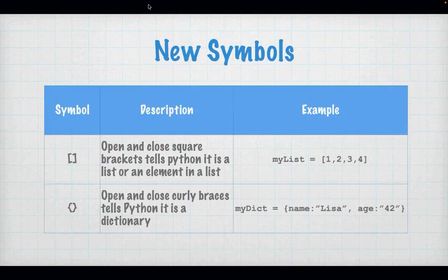We have a few new symbols we're going to be dealing with. The first is the open and close square bracket. An open and close square bracket is indicative of a list — an indication to Python that it's about to deal with a collection that is a list.